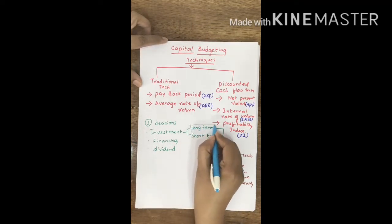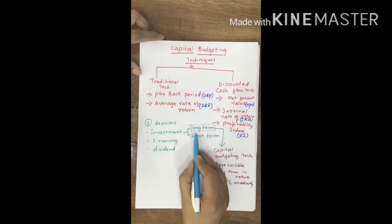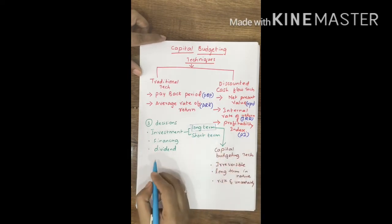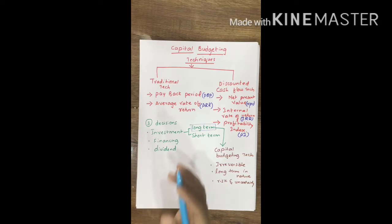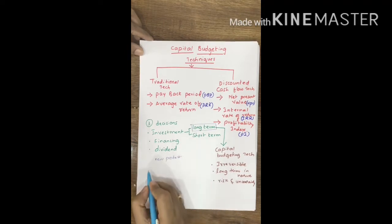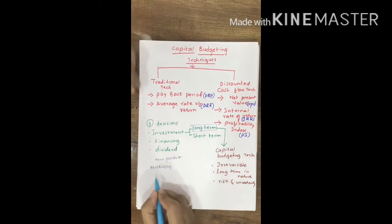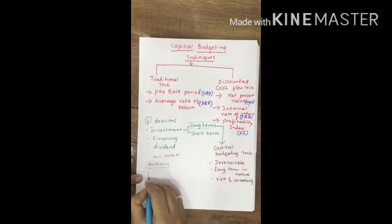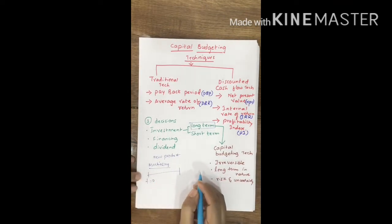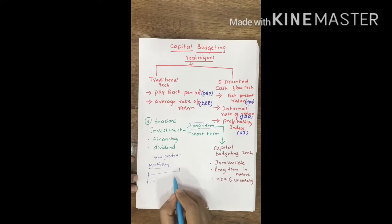Long-term investment proposals we will evaluate using capital budgeting techniques. For example, a company is taking up a proposal to launch a new product. To launch this new product, it has to arrange for various fixed assets, like purchasing of a machinery. The company will purchase machinery now, that is at time t equal to zero, and using this machinery, the company will manufacture various products, which by selling in future, it will generate revenue.